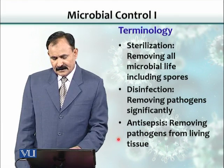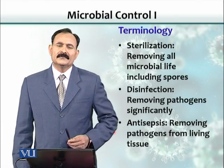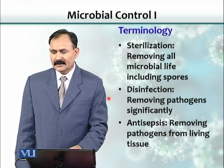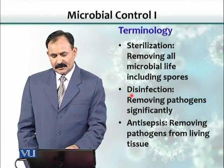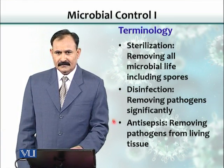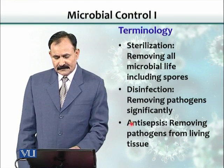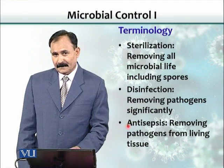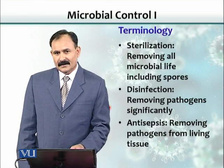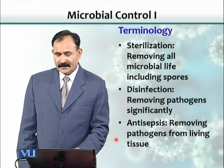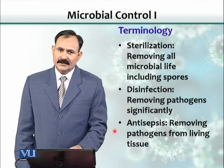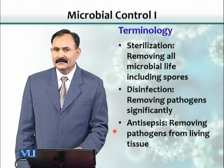The word antisepsis is used when we use the same chemical. If that chemical is used on an inanimate, non-living object, we use the term disinfection. But if the same chemical is used on a living human being or an animal, the term we use is antiseptic. So disinfectants are used on inanimate objects, while the same chemical when used on a living organism is called antisepsis. Both reduce the number of organisms significantly, but do not eliminate them completely.